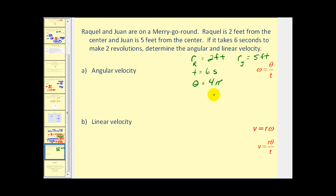Let's go ahead and reference our formulas here. The angular velocity, notice it does not require the radius. So the angular velocity is going to be the same for both Juan and Raquel. Angular velocity is equal to theta, which is 4π divided by 6 seconds. So the angular velocity will be 4π radians divided by 6 seconds, which is approximately 2.094 radians per second.